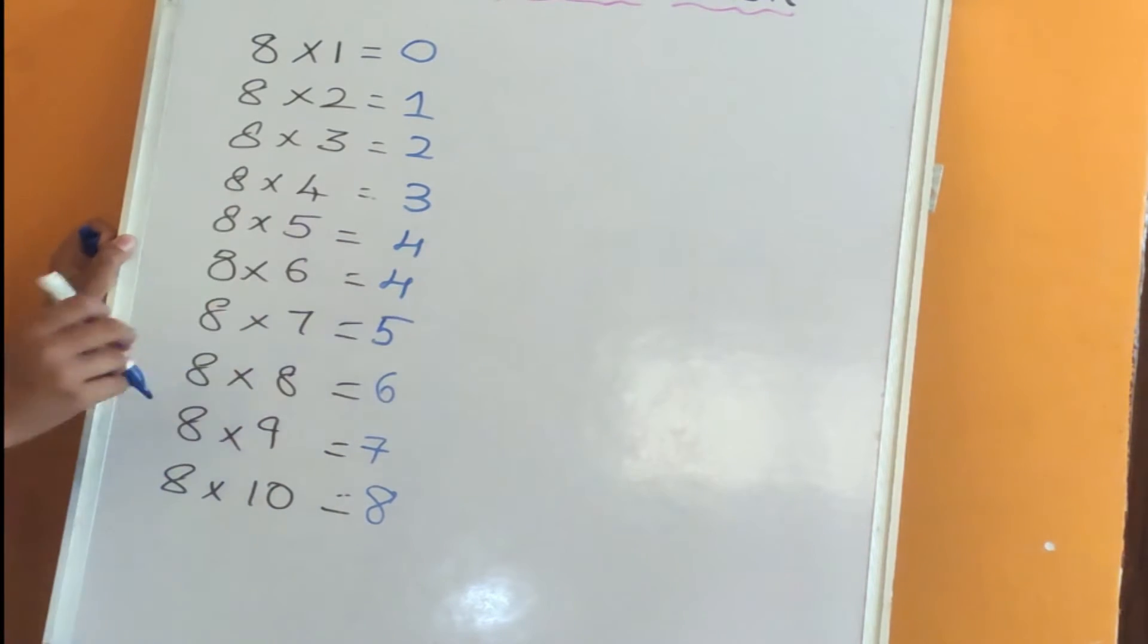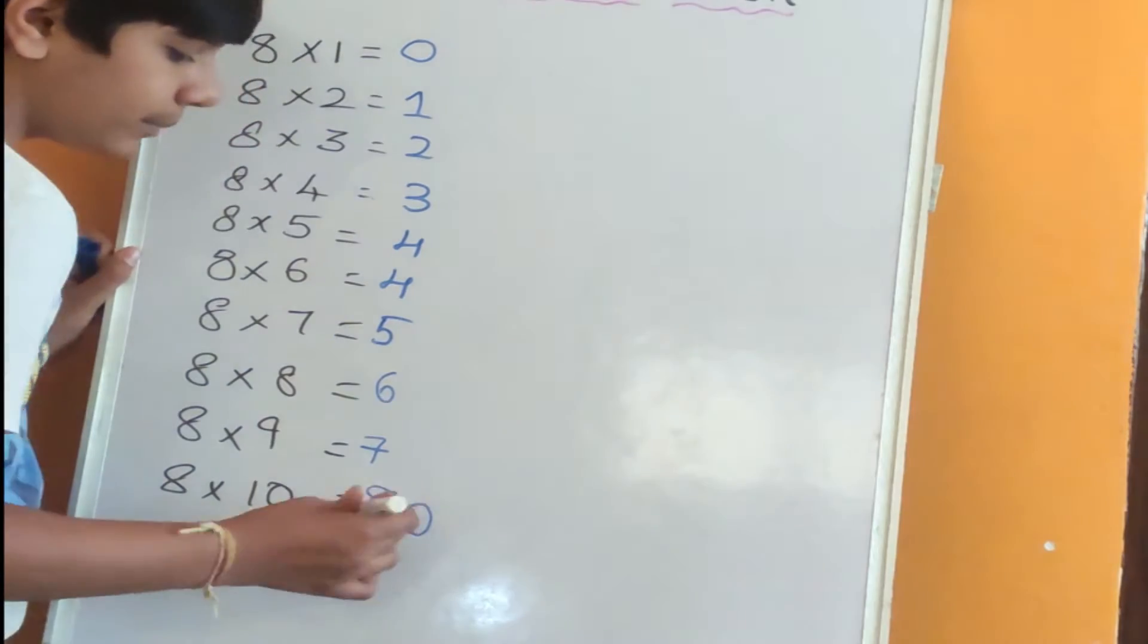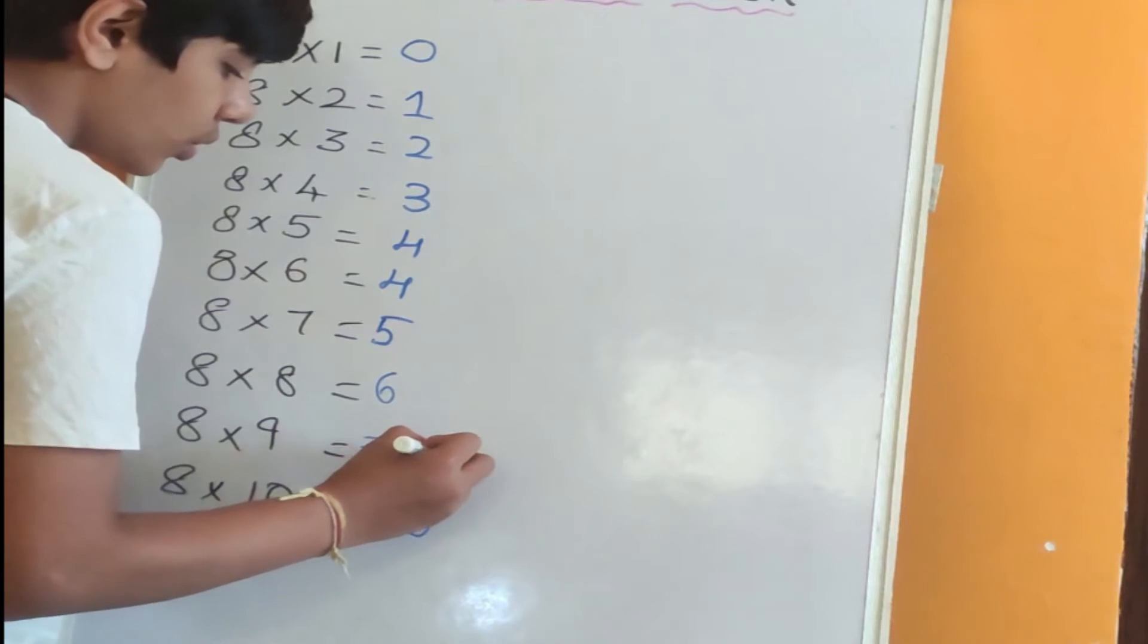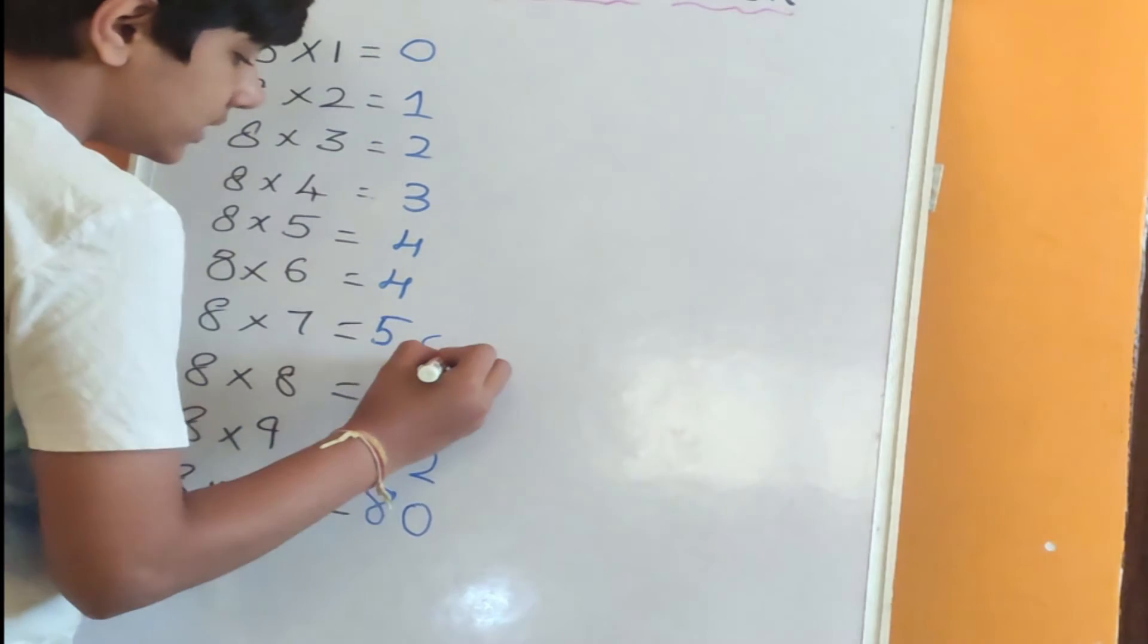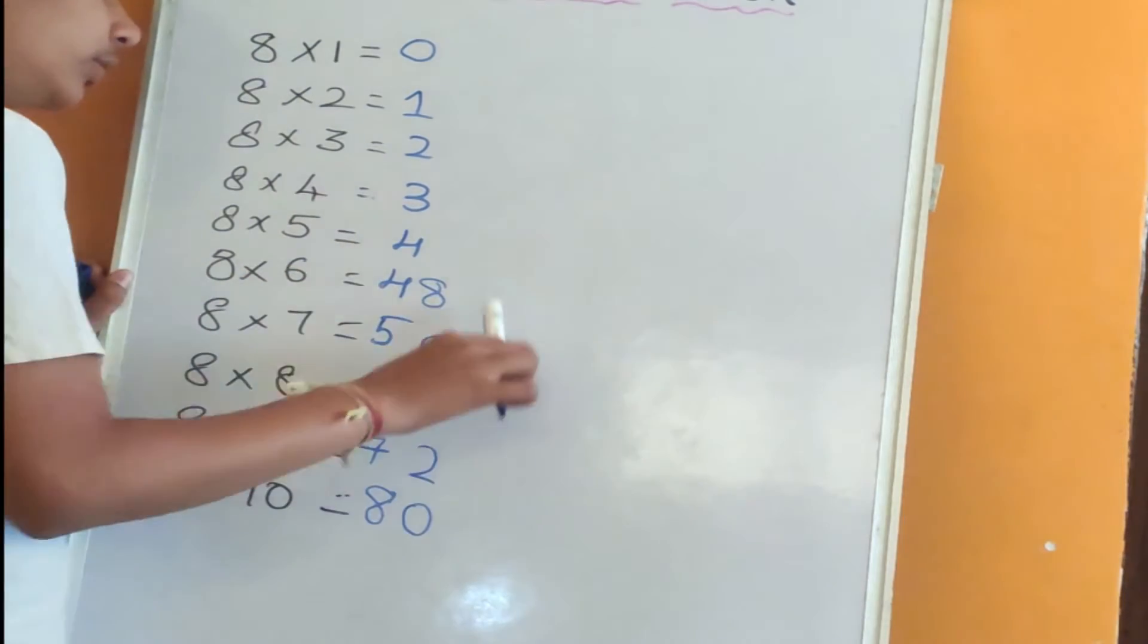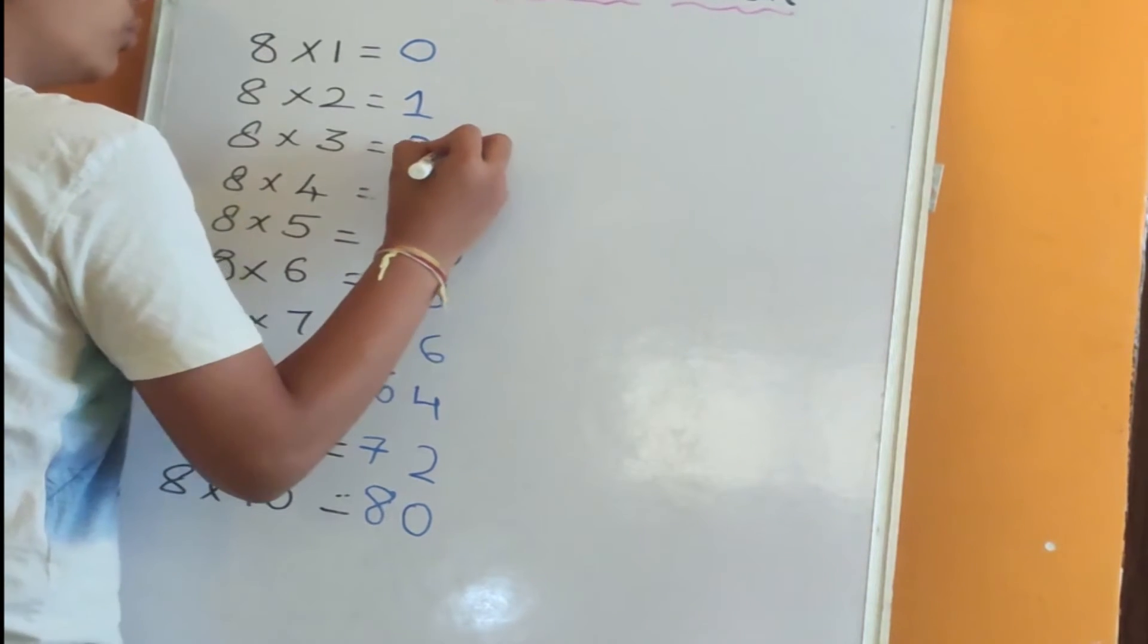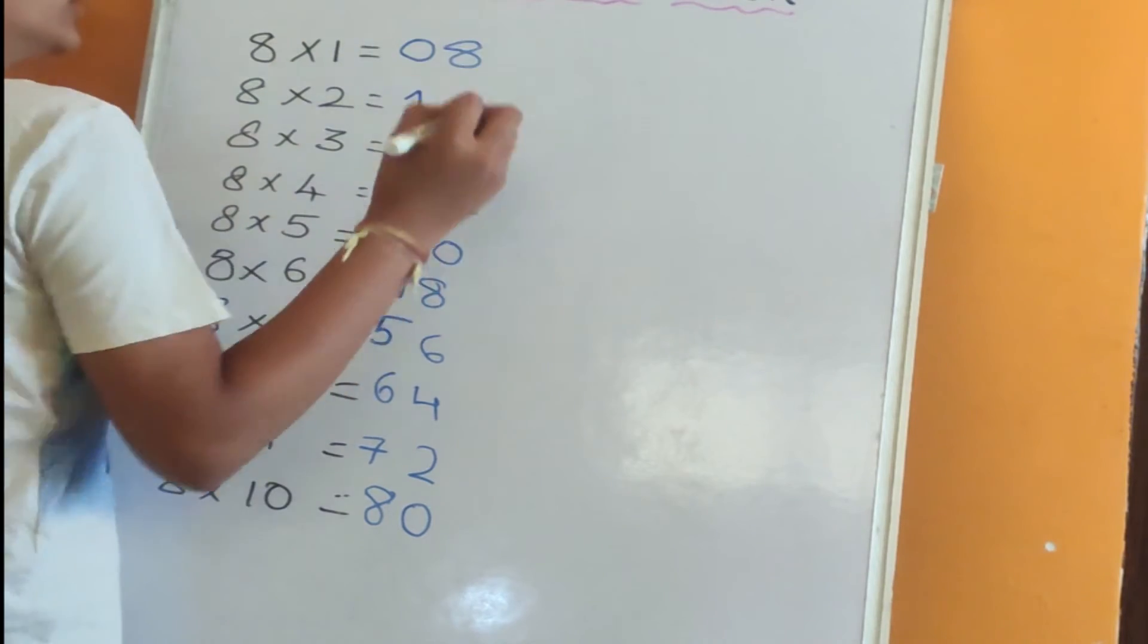Now the next step is we need to write first five even numbers from downwards to upwards: 0, 2, 4, 6, 8. Accordingly, we need to repeat this again: 0, 2, 4, 6, 8. So 8 table is completed.